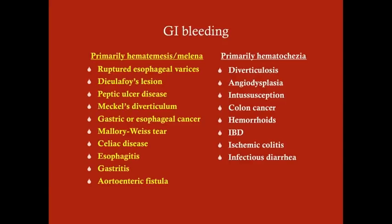With hematemesis, it is always an upper GI bleed. But with melena, it could be an upper GI bleed or a lower GI bleed, because melena is just black stool. If it's a very proximal lower GI bleed, it can be melena as well. In fact, one of the conditions we'll discuss is from a lesion in the lower GI system. Lower GI meaning distal to the ligament of Treitz, and proximal meaning proximal to the ligament of Treitz. We're going to talk about hematemesis and melena, which is typically upper GI.